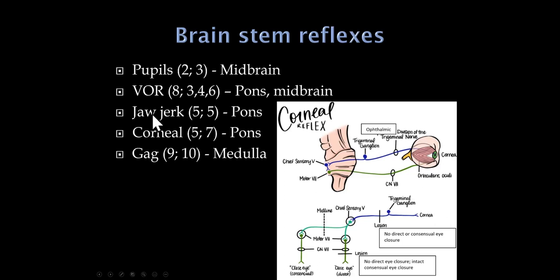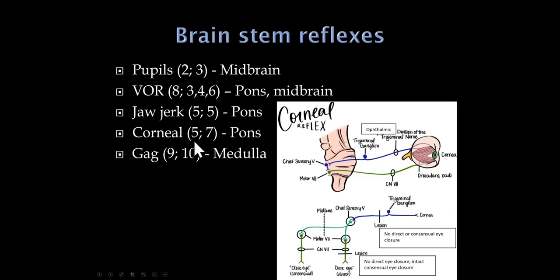The corneal reflex is something we'd always want to do in a comatose patient — touching the cornea activates the ophthalmic division of the trigeminal nerve, which stimulates bilateral facial nerve nuclei so both eyes should close. If we have a pontine hemorrhage, the patient usually does not have an intact corneal reflex. We can assess cranial nerves 9 and 10 and the medulla by doing the gag reflex — all of these can be really helpful.